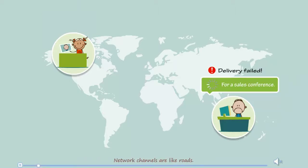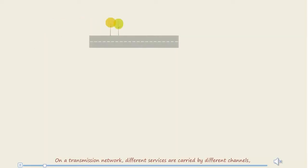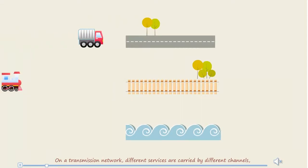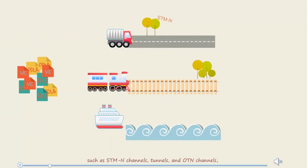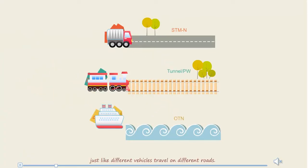Network channels are like roads. When one road is blocked, another road can be opened. On a transmission network, different services are carried by different channels, such as STMN channels, tunnels, and OTN channels, just like different vehicles travel on different roads.